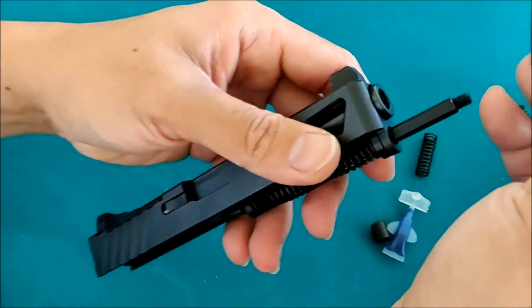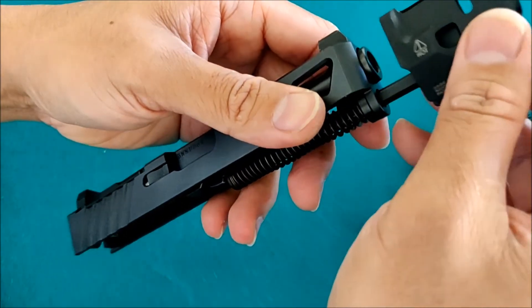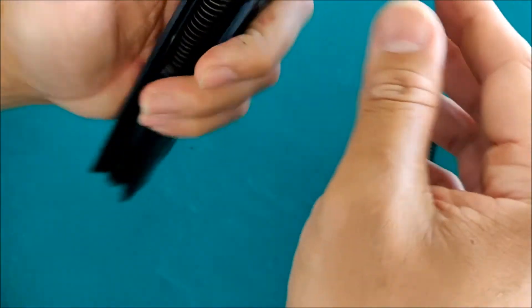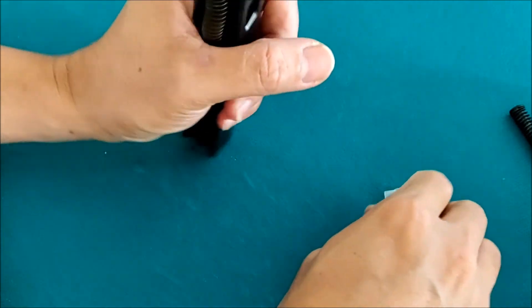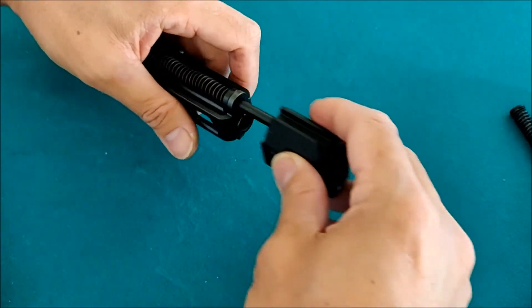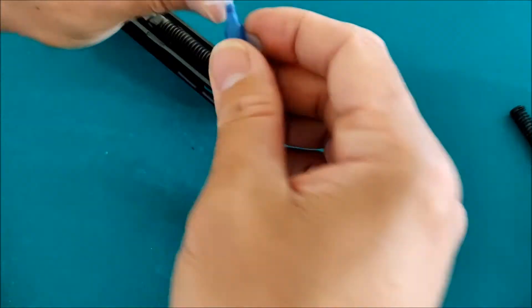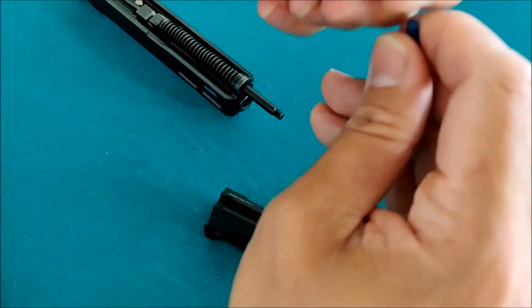So ito yung actual na compensator. So ayun yung spring ilalagay mo sa doon sa harap. So as you can see, naiwan na yung spring sa loob.